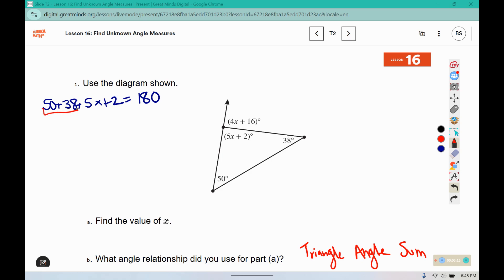I'm going to combine my like terms, so all of the numbers that are on the same side. 2 plus 38 is 40, and 40 plus 50 would give me 90. The variables cannot be combined with the numbers so they stay separate.